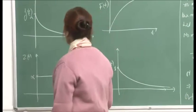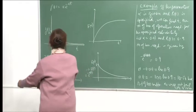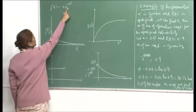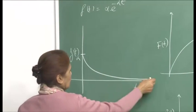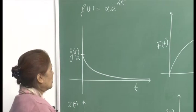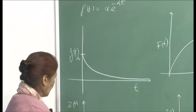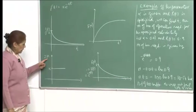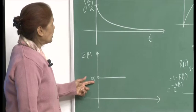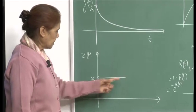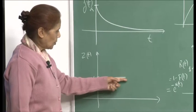Let us look at the various graphs connected with the exponential failure law. The familiar one: at t equal to 0, the pdf equals α, and then it goes down — as t goes to infinity, the pdf goes to 0. Correspondingly, the failure rate z(t) is α, which is a constant — it continues to be α for all values of t.